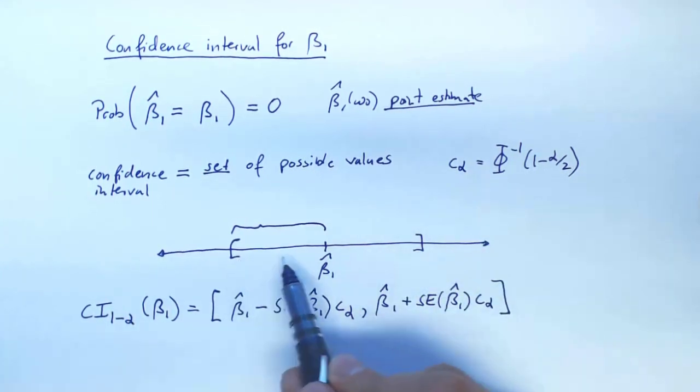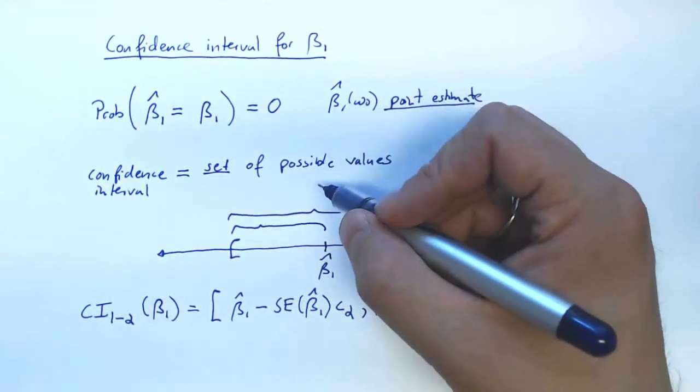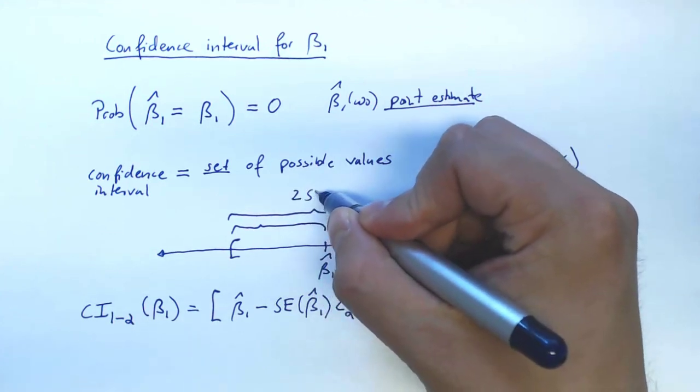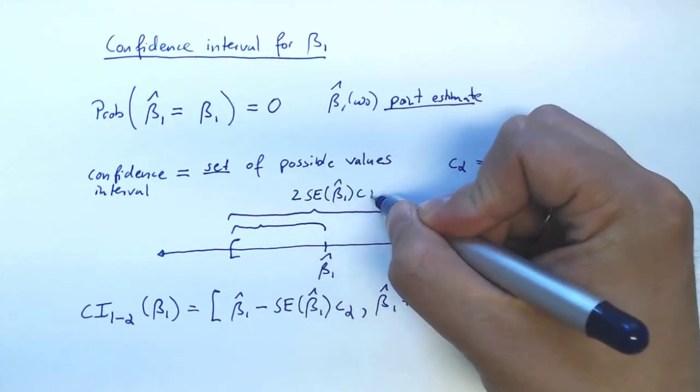So the total length of the interval that we are reporting will be 2 times standard error times C alpha.